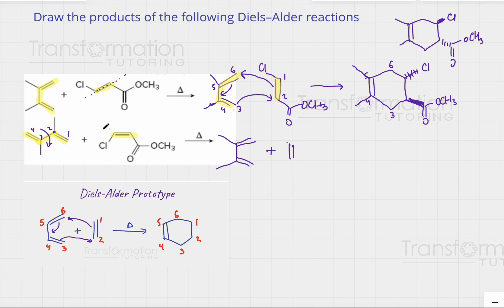Our dienophile has to be aligned with our diene. One carbon on this dienophile has a chlorine and another carbon has an ester group. In this case though, these two groups are on the same side of the double bond — this is cis. So I'm going to make sure to put them on the same side of the double bond as well.